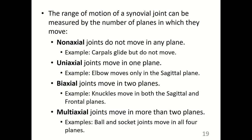The range of motion of a synovial joint can be measured by the number of planes in which it moves. Non-axial joints do not move in any plane — for example, the carpals glide over each other when you wiggle your wrist but do not rotate. A uniaxial joint moves in one plane only; for example, the elbow moves in the sagittal plane. Biaxial joints move in two planes — for example, the knuckles move in both the sagittal and frontal planes, where the phalanges articulate with the metacarpals. Multiaxial joints move in more than two planes — for example, the ball and socket joints of the shoulder and hips move in all planes in a process called circumduction.